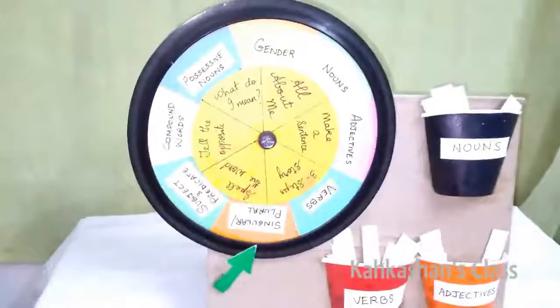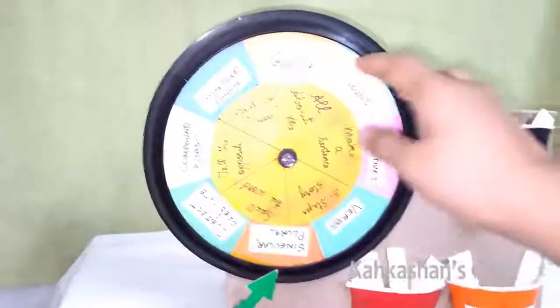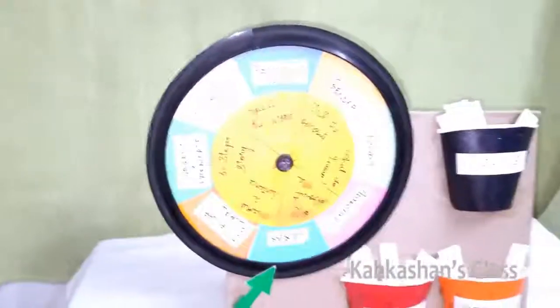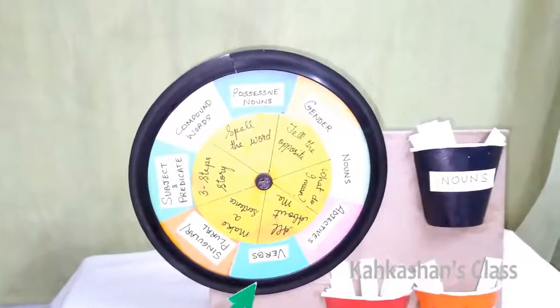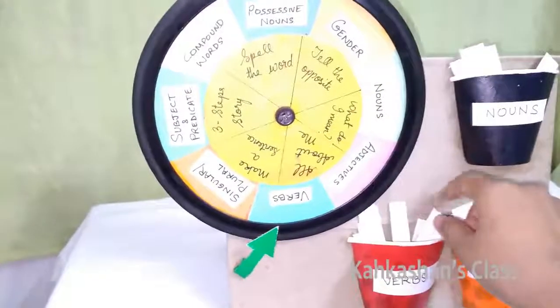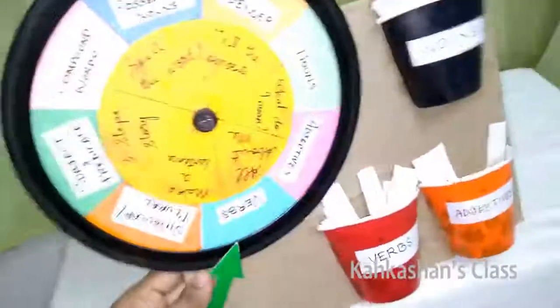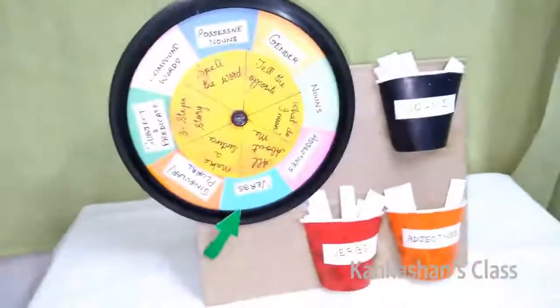Again, turn the wheel, both wheels. Now it is pointing to verbs and all about me. Pick up the verbs and repeat the same procedure. Play the game and have fun.